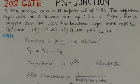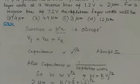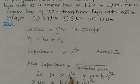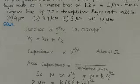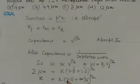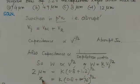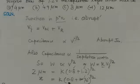The capacitance and depletion width are inversely proportional — a larger depletion width means a smaller junction capacitance. Therefore, the depletion width W is proportional to V to the power of one-half, written as W = K·VJ^(1/2). For the first case, VJ equals the built-in potential plus reverse bias of 1.2 volts, giving a width of 2 micrometers. For the second case, VJ equals 0.8 plus 7.2, and we must find the depletion width X.